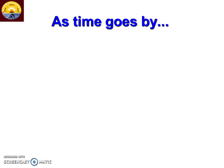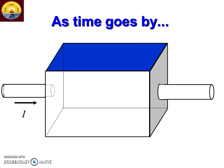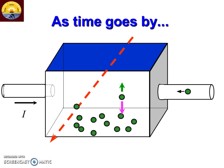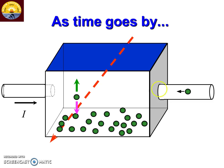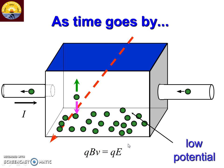This process continues up to a certain time, at which point we reach the equilibrium position — the force on one side is balanced by the force on the other side. Here, the magnetic force is balanced by the upward force given by QE. So QV cross B is balanced with the upward force QE. Since the velocity and the magnetic field are both perpendicular, BV sin θ with θ = 90° gives BV. So QVB equals QEH.